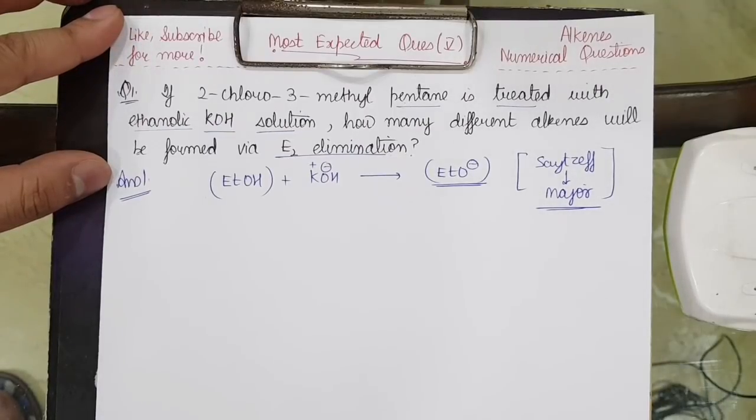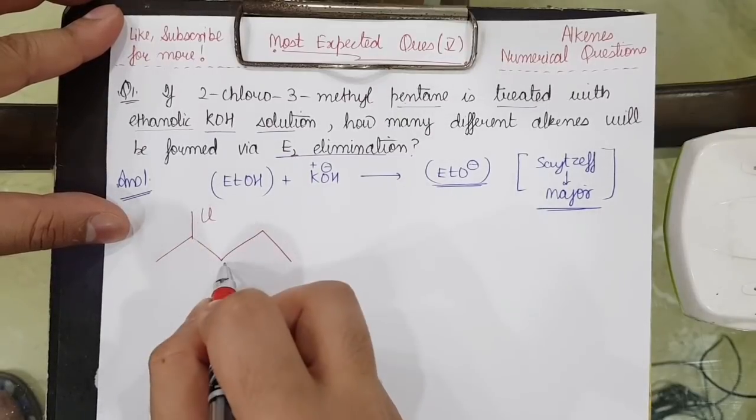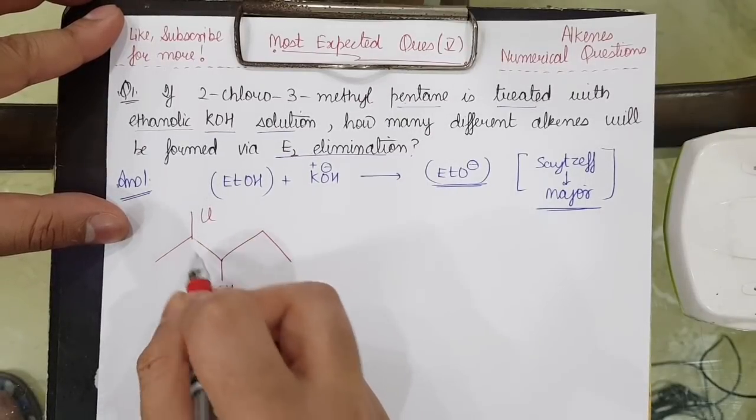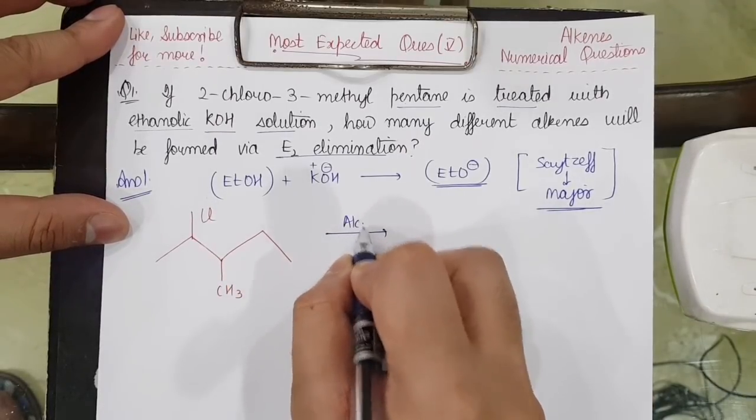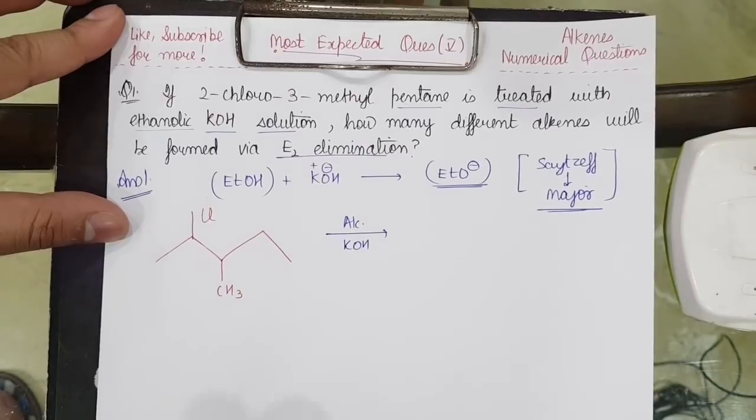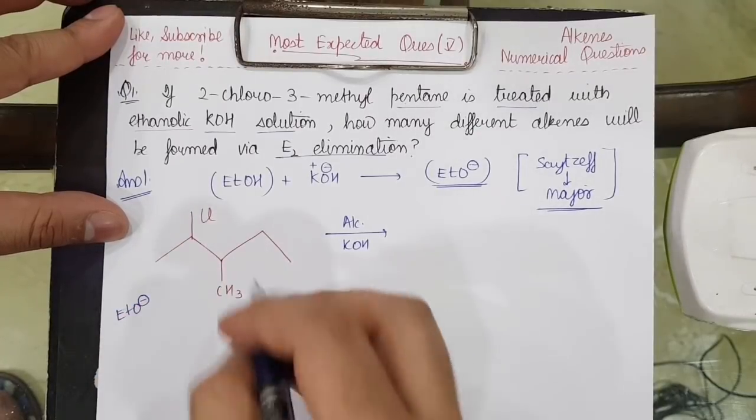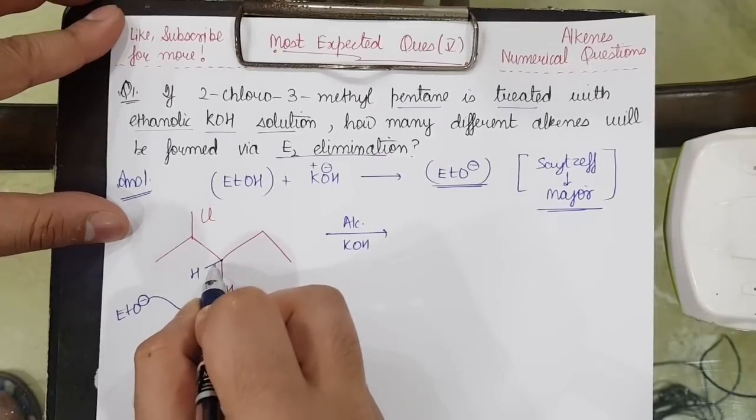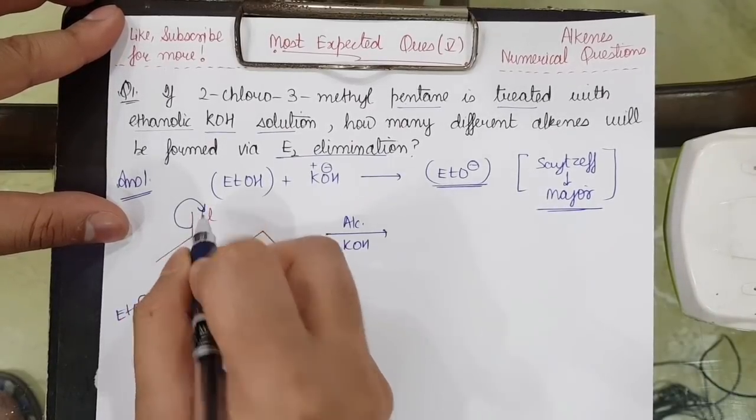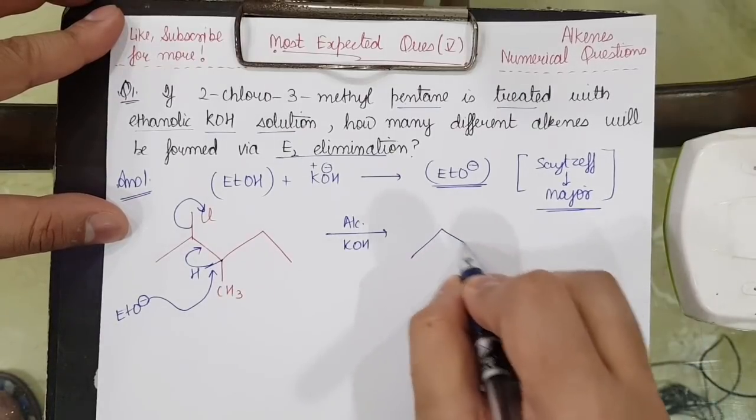First of all, 2-chloro-3-methylpentane would look somewhat like this. Now I am reacting this with alcoholic KOH. E2 elimination means removal. ETO minus came. I need to make the major product. So this hydrogen is present here. It extracts it, this bond moves here, double bond forms, takes out the Cl from here. So HCl is removed, giving me the formation of the double bond.